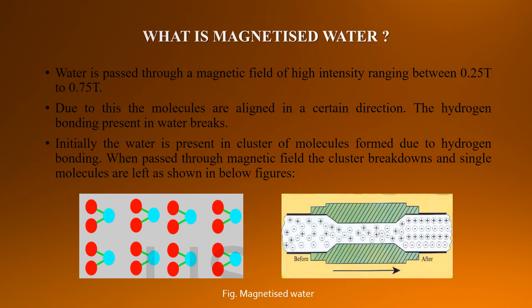What is magnetized water? Water is passed through a magnetic field of high intensity ranging between 0.25 T to 0.75 T. Due to this, the molecules are aligned in a certain direction and the hydrogen bonding present in water breaks. Initially, water is present in clusters of molecules formed due to hydrogen bonding. When passed through a magnetic field, the clusters break down and single molecules are left, as shown in the figure below.